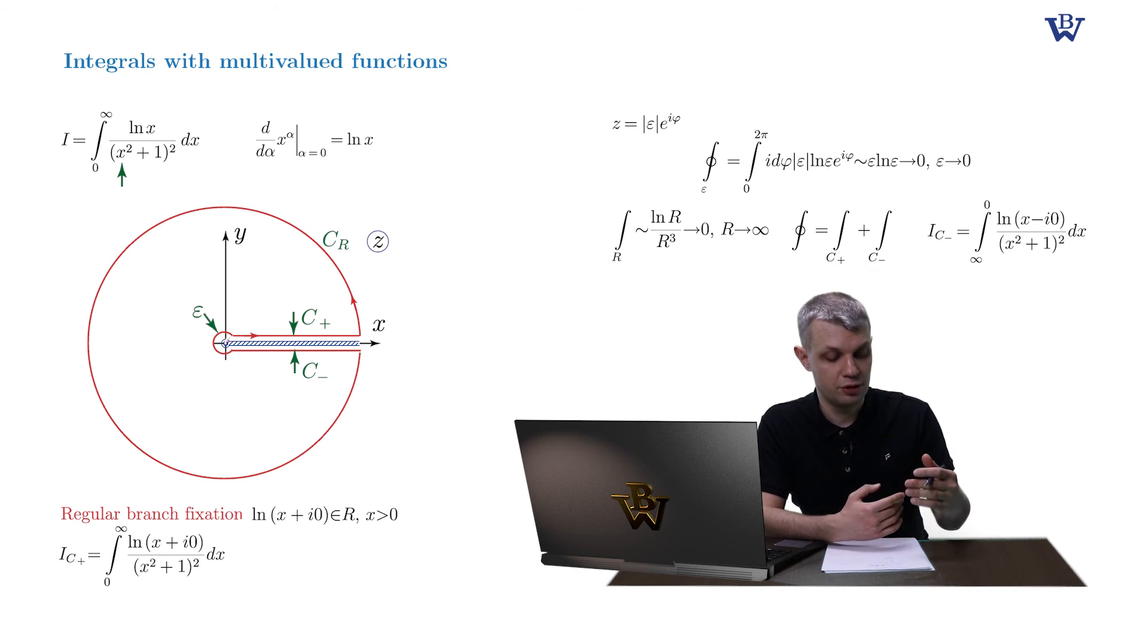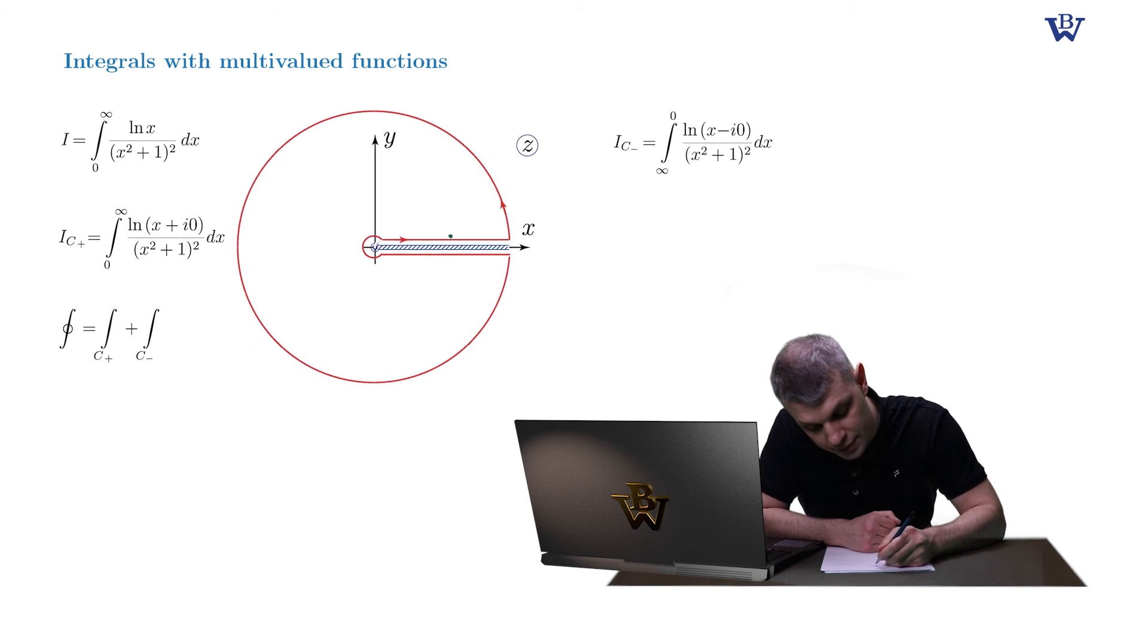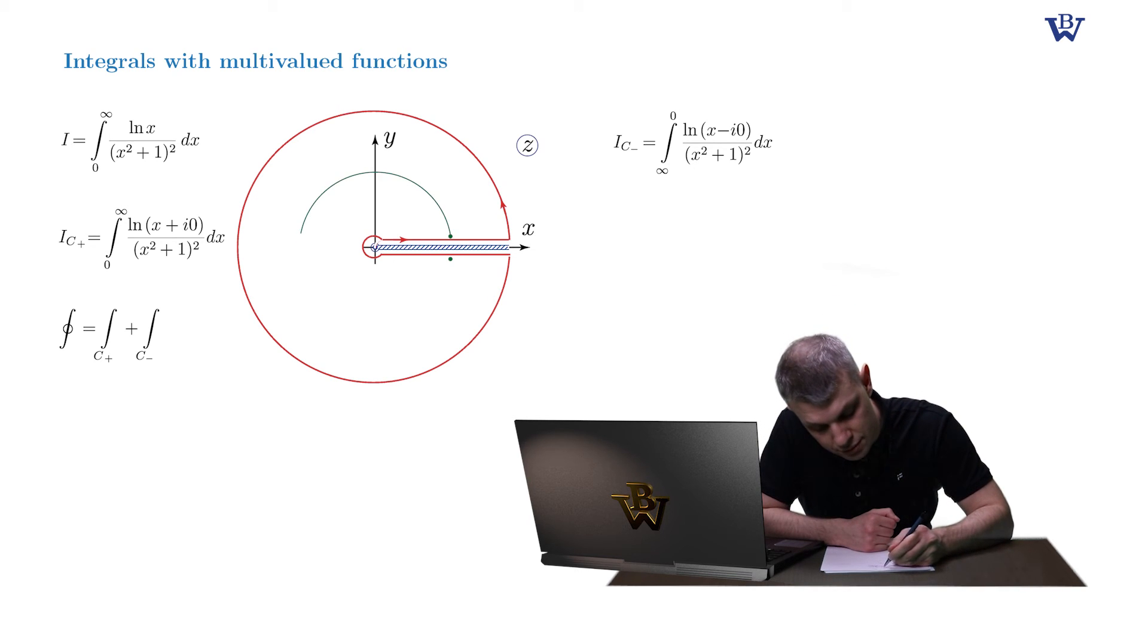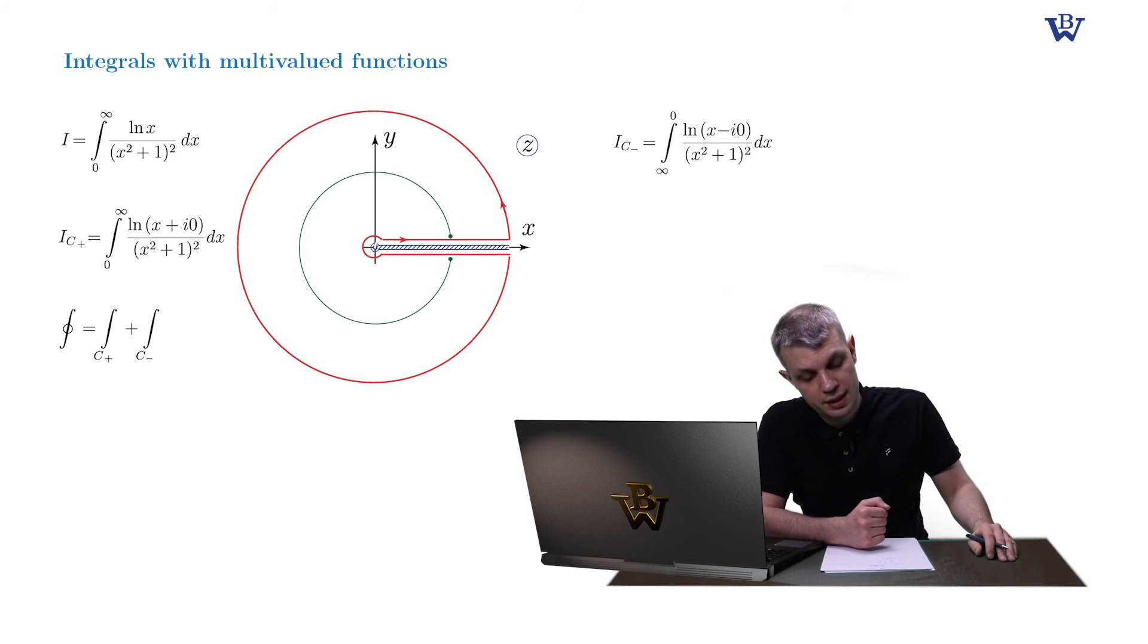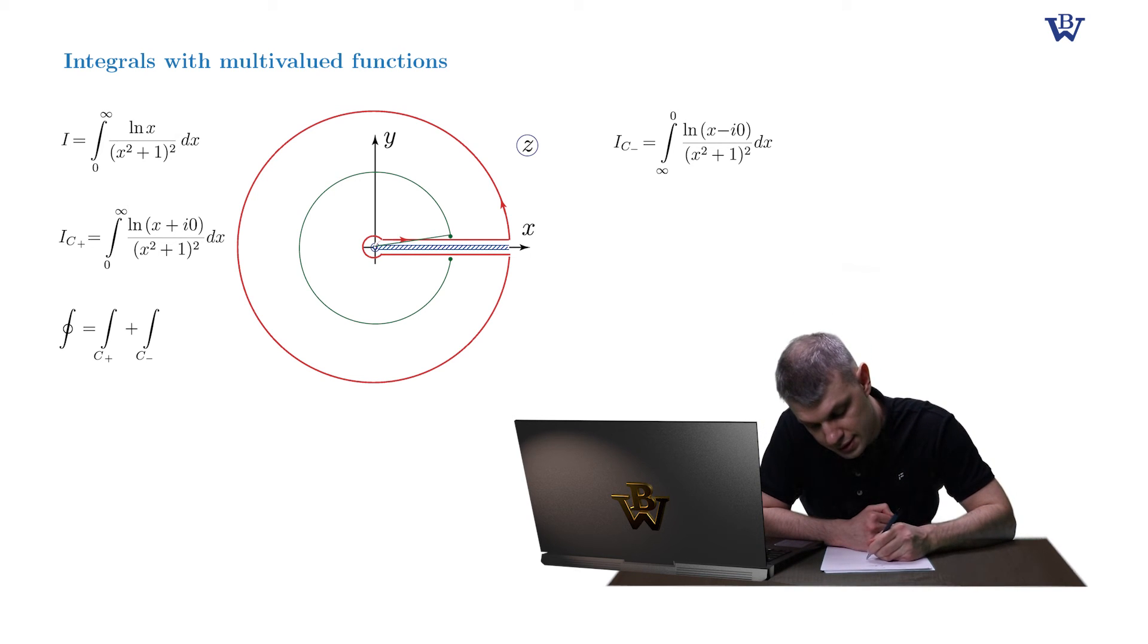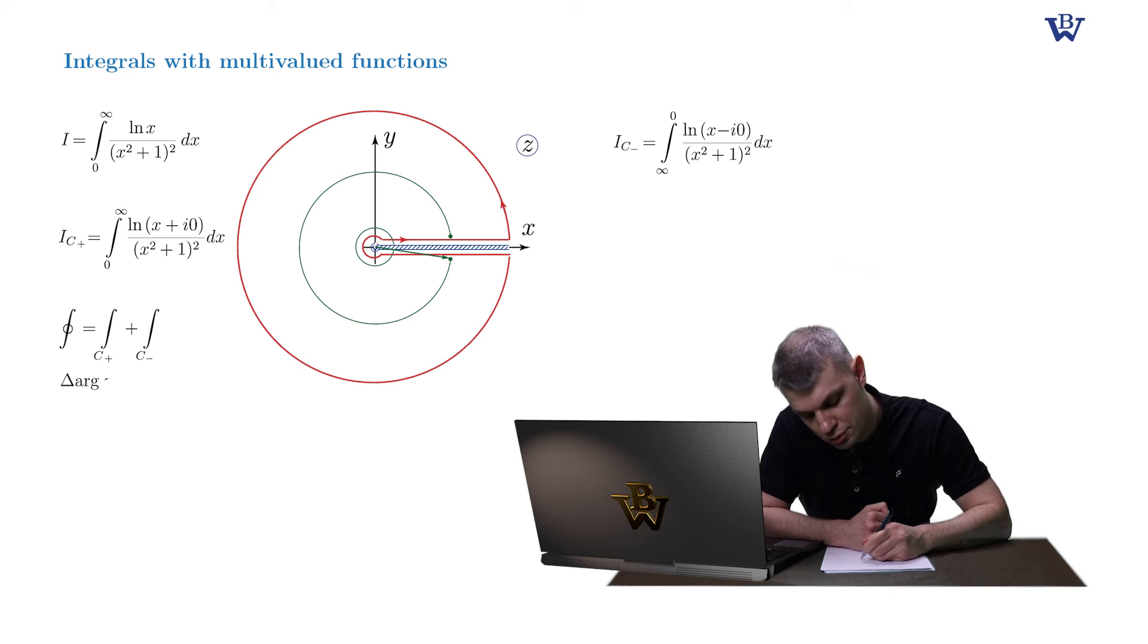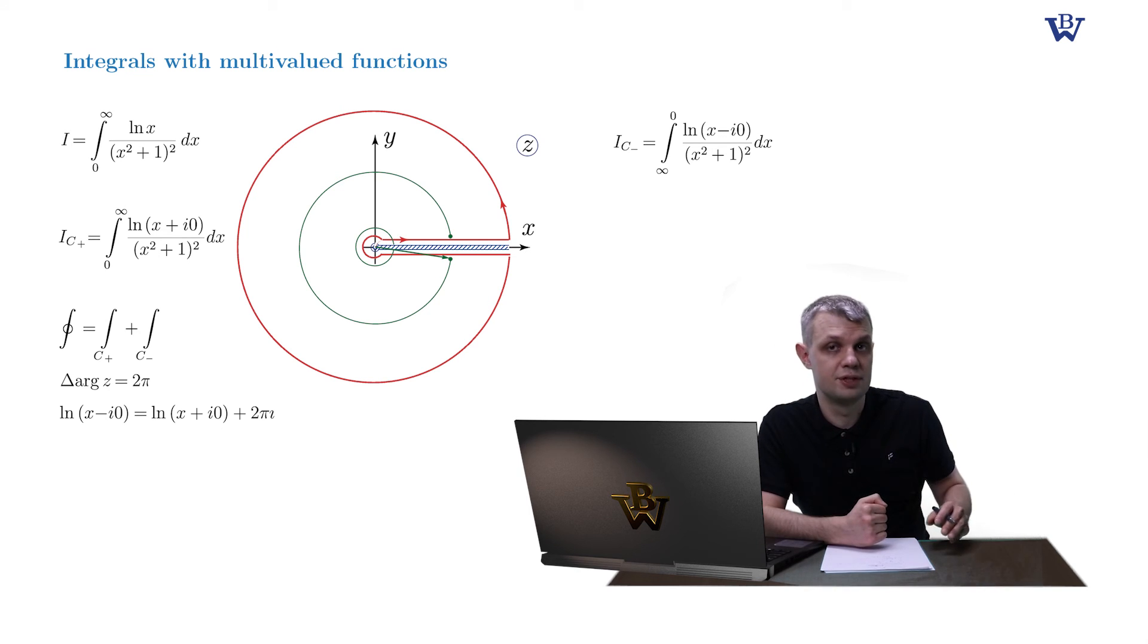...we need to relate the values of our log function at the upper and lower bank of our branch cut. So let's draw two points x naught plus i zero and x naught minus i zero. And relate the values of our multi-valued function at these two points in the standard manner. So we draw a contour connecting these two dots. A simple circle to the left and then trace the change of the argument of our log function. So obviously z rotates by 2 pi in the counterclockwise direction. So delta argument of z is equal to 2 pi. As a result, the logarithm of (x minus i zero) equals logarithm of (x plus i zero) plus 2 pi i.